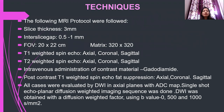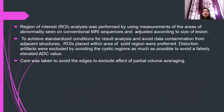The following MRI protocol was followed. All cases were evaluated by DWI in axial planes with ADC map. A single-shot echo-planar DWI sequence was performed. DWI was obtained using diffusion-weighted factor with b-values of 0, 500, and 1,000 seconds per mm squared. Region of interest analysis was performed by measuring areas of abnormality seen on MRI sequences and adjusted according to the size of the region. To achieve standardized conditions and avoid data contamination from edges, the ROI was placed within the solid region of interest, with care taken to avoid edges to minimize the effect of partial volume averaging.